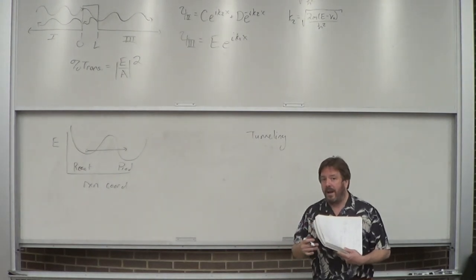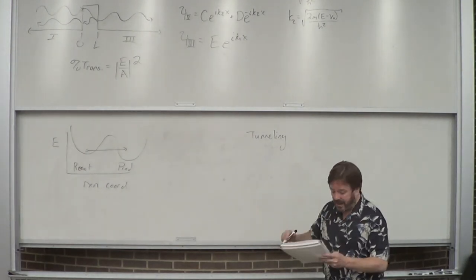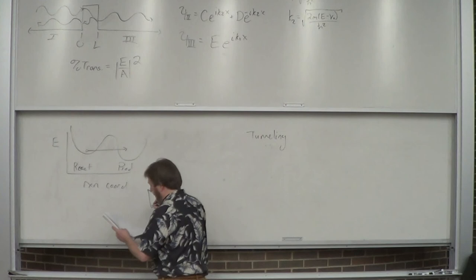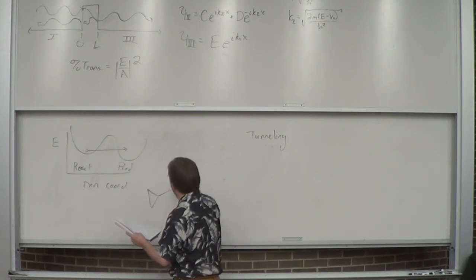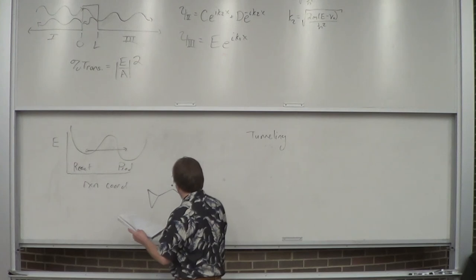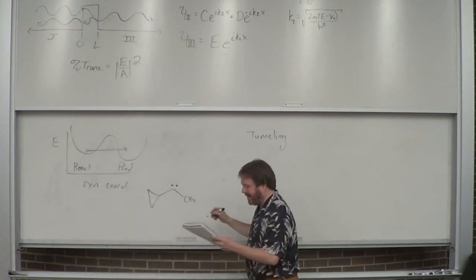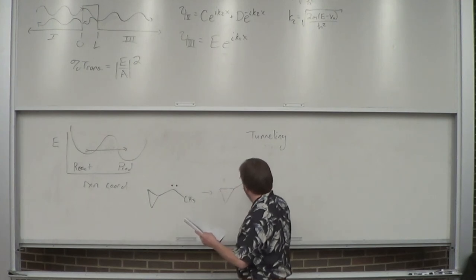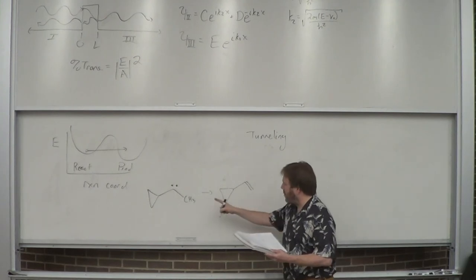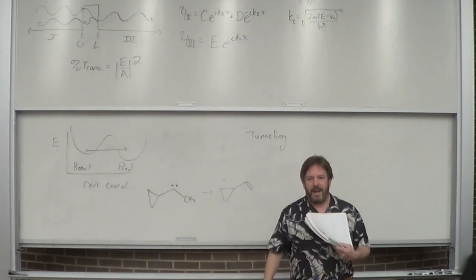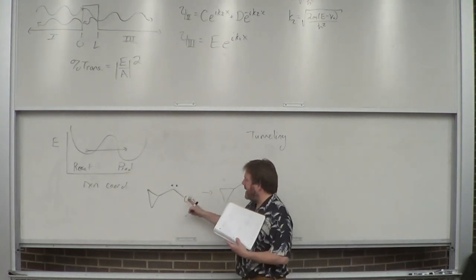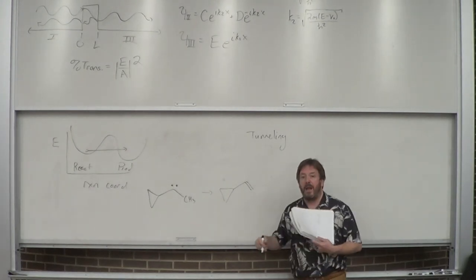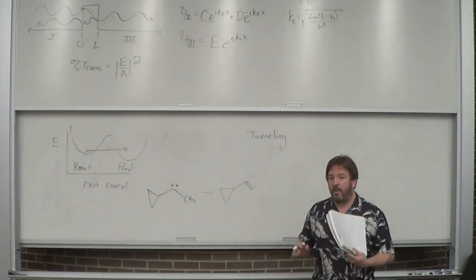Tunneling is found in organic chemistry. I think this is called a carbene — I'm kind of a synthetic inorganic chemist, so forgive me. What's happened is a proton has tunneled over to that carbon, and it really is a tremendous amount of energy for a C–H bond to break, yet even at low temperatures you can see this rearrangement, and that has to be due to tunneling.